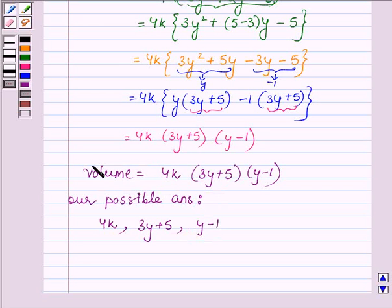Since volume equals length times breadth times height, any one of these can be the length, breadth, or height. So our possible dimensions are 4k, 3y + 5, and y - 1. This completes the solution. Hope you enjoyed this session, take care and have a good day.